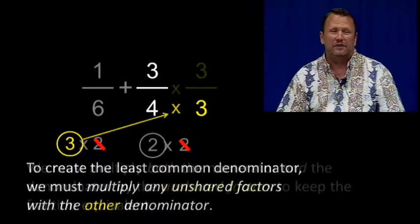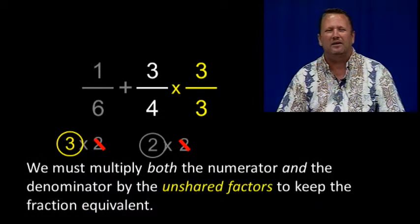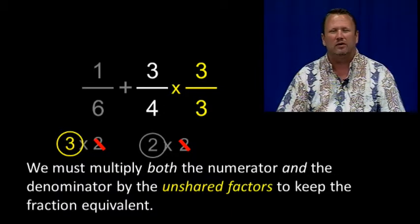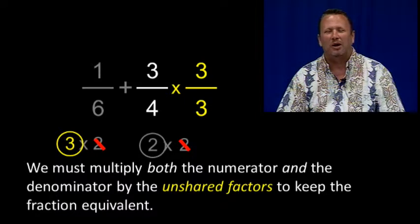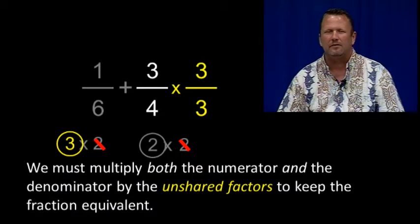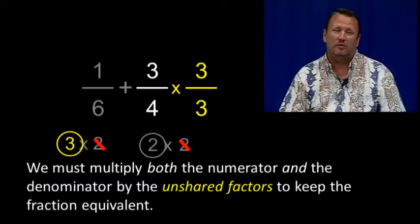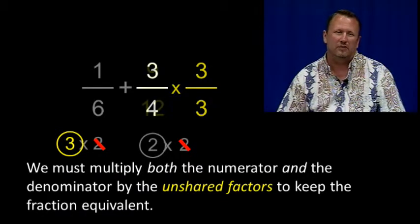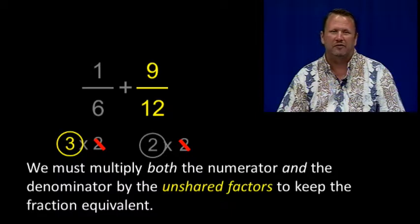Since anything over itself is equal to 1, we will multiply both the numerator and the denominator by any unshared factors to keep the fraction equivalent. Here, we've taken the fraction 3 quarters and multiplied that with 3 over 3. So 3 over 4 times 3 over 3 is equal to 9 over 12. Remember, 9 over 12 is the equivalent fraction of 3 quarters.